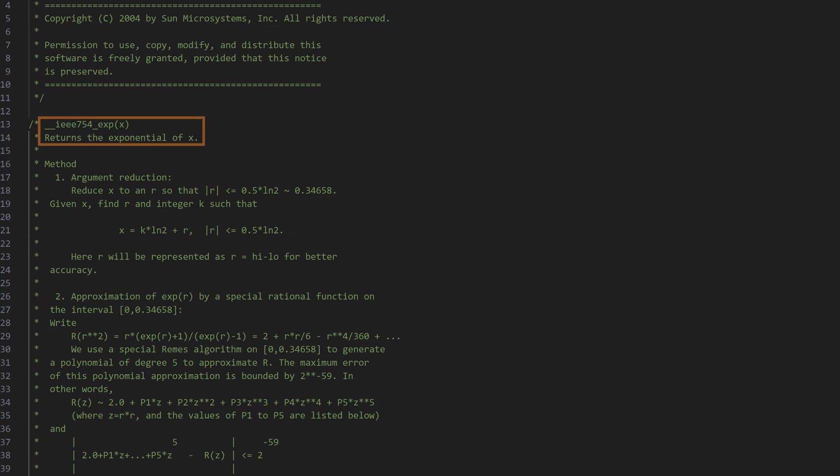In the comments for the exponential function, they write that the first thing you'll actually do is break up our x value into k and r values, where r is some special number using natural log of two. Our next step is to use this crazy function approximation using what's known as a Riemann's algorithm. If you're interested, I can make a video just on how those algorithms work.